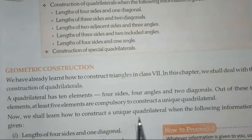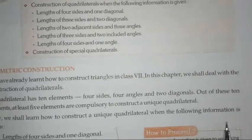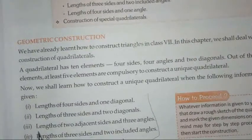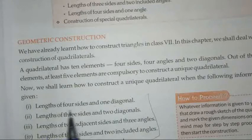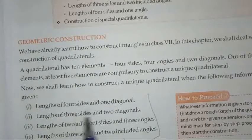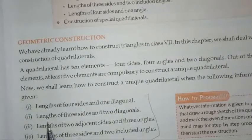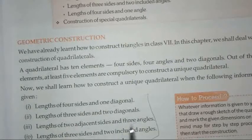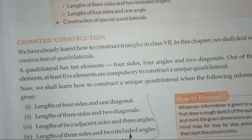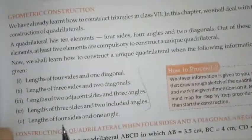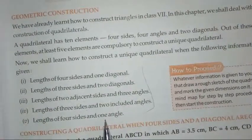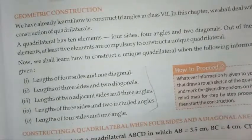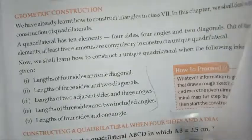Now, we shall learn how to construct a unique quadrilateral when the following information is given: length of 4 sides and 1 diagonal, length of 3 sides and 2 diagonals, length of 2 adjacent sides and 3 angles, 3 sides and 2 included angles, or 4 sides and 1 angle. In section 6.1, we study about the length of 4 sides and 1 diagonal.